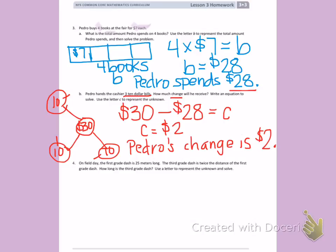I know that the first grade dash is 25 meters long, and the third grade dash is twice that long. When I think about the word twice, that means I see it two times.